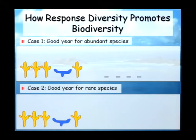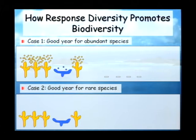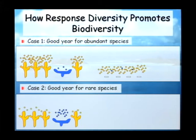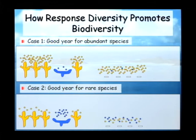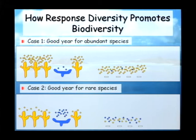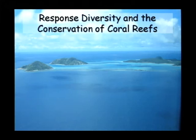Consider two species: an abundant orange species and a rare blue species, both producing offspring that compete for limited settlement space on the reef. In a good year for the abundant species, orange produces many offspring; in a good year for the rare species, blue produces many while orange produces fewer. The two species produce the same average number of offspring over the two years, but the blue species is much more successful at replacing itself because its larvae are in the water disproportionately in years when competition for sites is weak. This means the rare species has an advantage: as it gets rarer, it tends to get a replacement advantage that helps it bounce back.